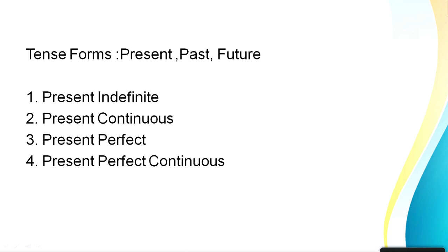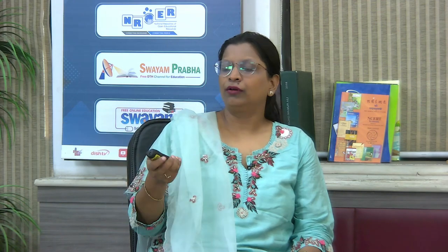Just like time, we have three tenses: present, past, and future. Today we'll only talk about present tense because it's a relatively big topic. With the same foundation, we can later understand all three tenses. There are four types of present tense: present indefinite, present continuous, present perfect, and present perfect continuous.